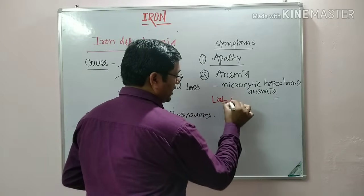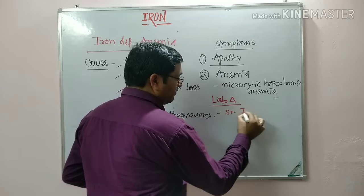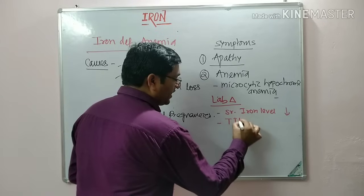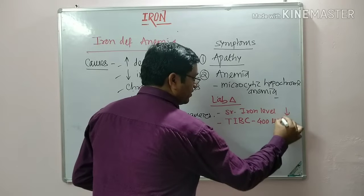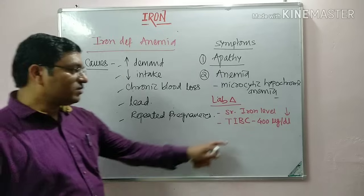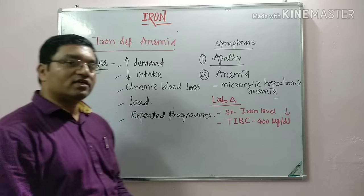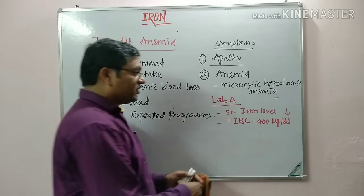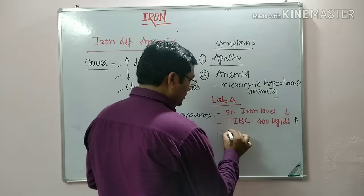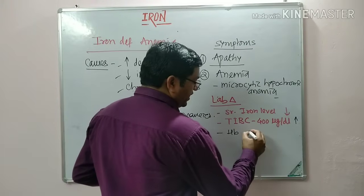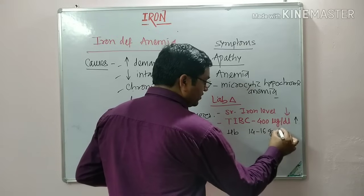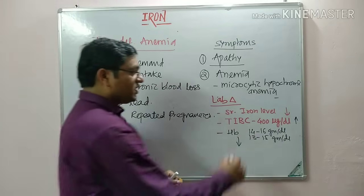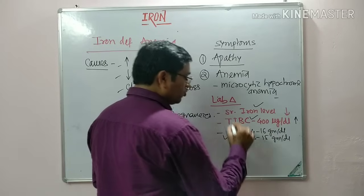Laboratory investigations include: first, serum iron level, which decreases in iron deficiency anemia. Second, total iron binding capacity (TIBC), which is normally about 400 micrograms per deciliter — this is the capacity of binding iron to transferrin, whose normal level is 250 milligrams per deciliter — and TIBC increases in iron deficiency anemia. Third, hemoglobin level: in males it is 14 to 16 grams per deciliter; in females it is 13 to 15 grams per deciliter. Hemoglobin level decreases in iron deficiency anemia. So: serum iron decreases, TIBC increases, and hemoglobin decreases.